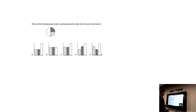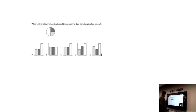Which of the following bar charts can represent the data from the pie chart? The white is double the size of the light gray and the dark gray, so the only possibility is going to be A.